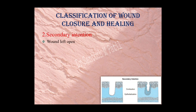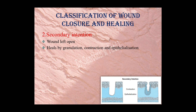Healing by secondary intention is where the wound is left open mainly because of lot of contamination. This tissue heals by granulation, contraction, and epithelization. The process of wound healing is not normal compared to primary intention — lot of granulation tissue needs to grow between the tissues, and the process of contraction and epithelization are very much delayed, resulting in bad-looking scars.